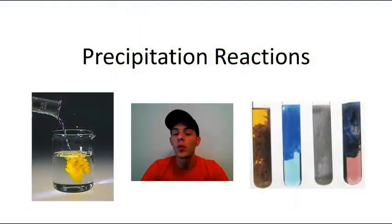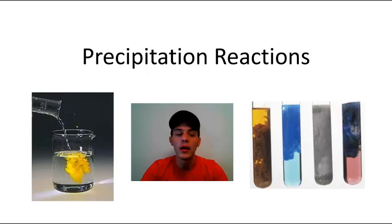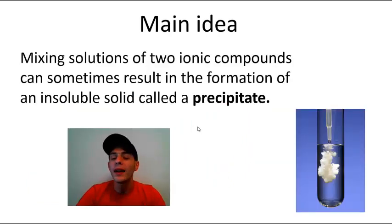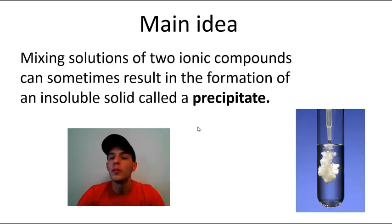Hey, what's up everyone? In this video we're going to talk about precipitation reactions. The images on the left and right hand sides of your screen are just a few examples of precipitation reactions occurring. The main idea here is that when you mix solutions of two ionic compounds together, sometimes that can result in the formation of an insoluble solid called a precipitate.